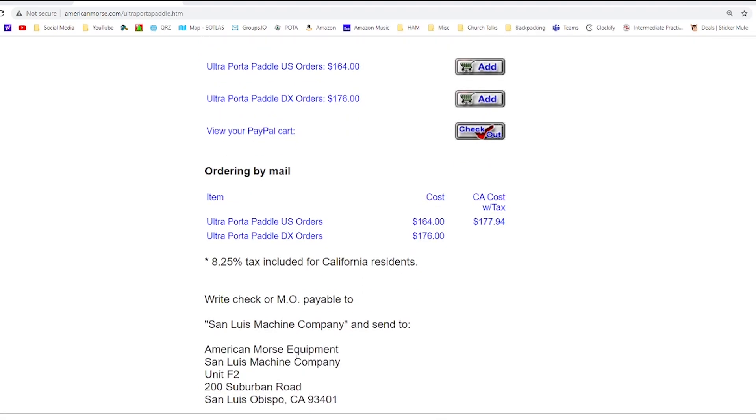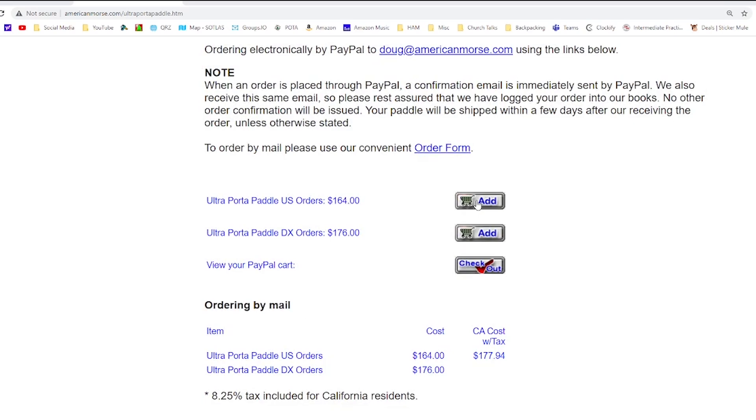You can also order with a check or a money order and mail it in if you want, but I chose the PayPal option. So when you click add, it'll go to the cart and take you right to the PayPal purchasing area and you have to log in and pay that way. So those are the two options you have.